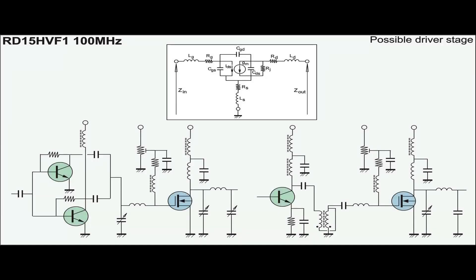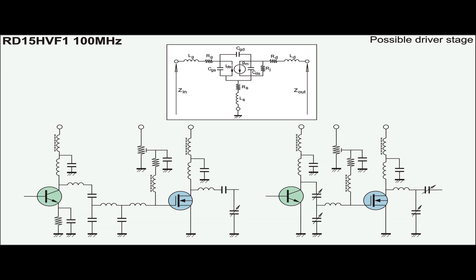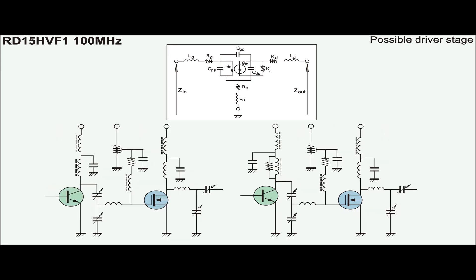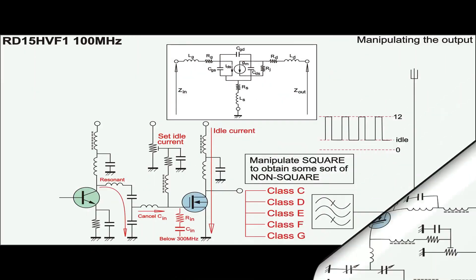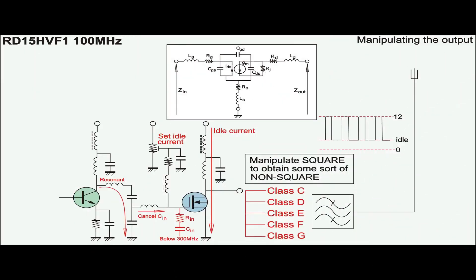This slide shows some of the possibilities to drive the RD15. And as mentioned earlier, the output of the MOSFET normally creates all kinds of harmonics, which is treated by definition of classes, namely C, D, E, F, and G as shown.